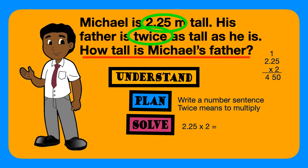Now, we need to indicate where our decimal point should go. And because there are only two digits behind the decimal point in the number 2 and 25 hundredths, then in our product, there will only be two digits behind the decimal point. So, our answer is now 4 and 50 hundredths feet.